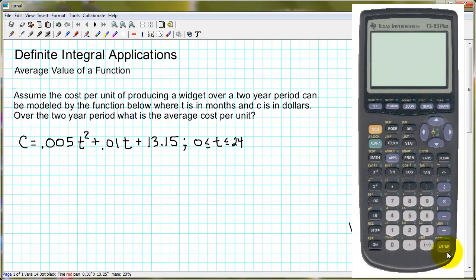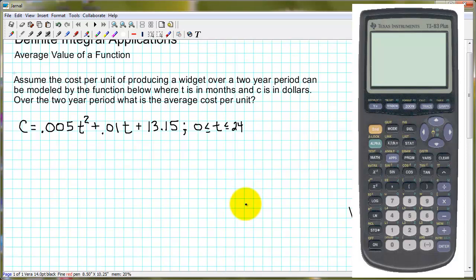Hello, Mr. T here with an application on definite integrals. In an earlier tutorial titled Area Under a Curve, we introduced the concept of an area under a curve and finding that area using something called definite integrals, and we introduced the fundamental theorem of calculus. Today we're going to talk about using the definite integrals for another application which is to find the average value of a function. We'll get into the problem I have here in a second, but before we do that, let's just review what we mean by average value.